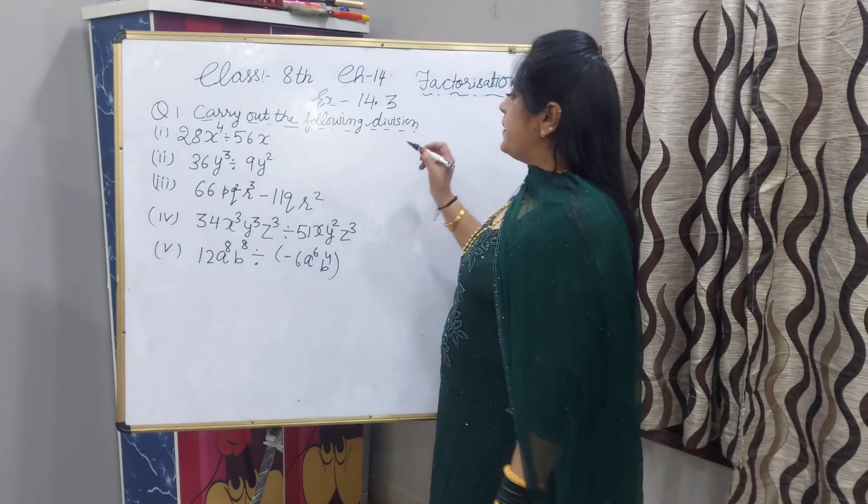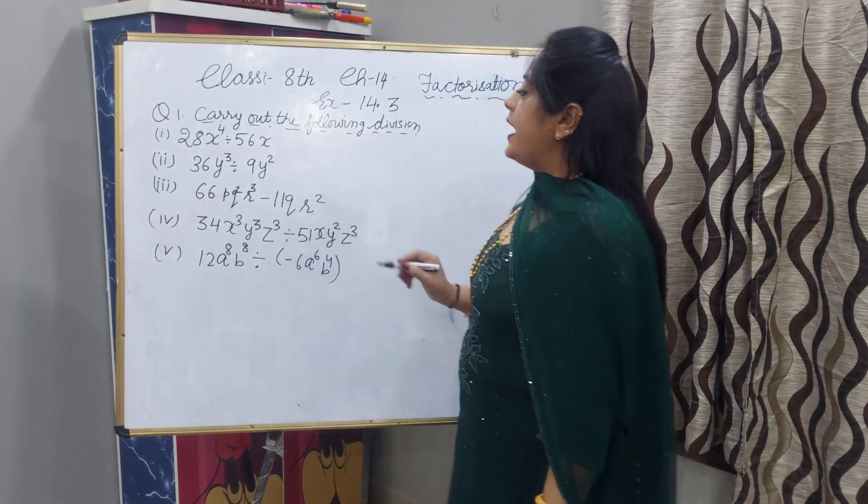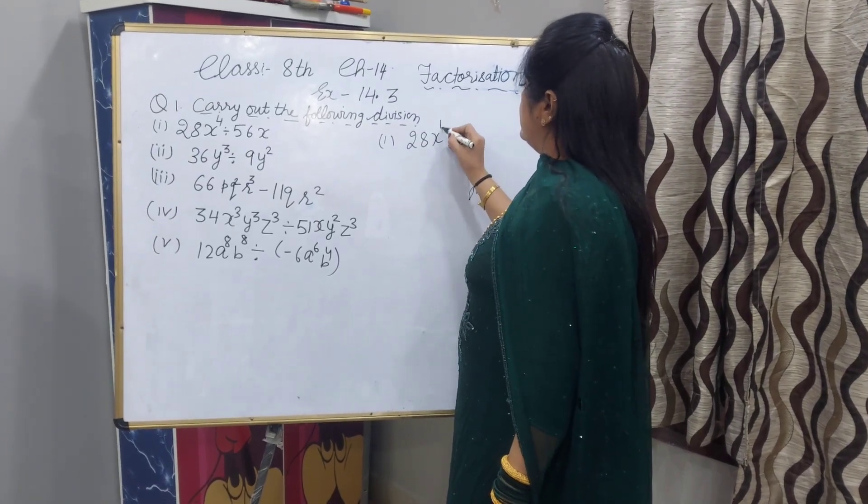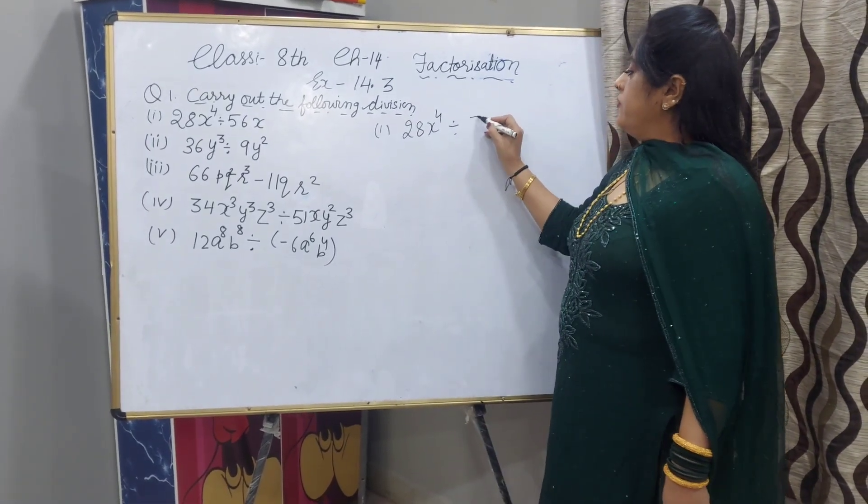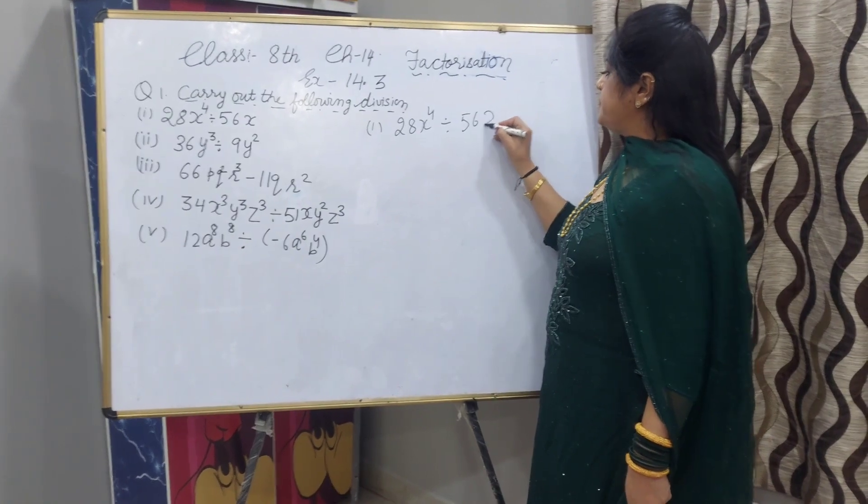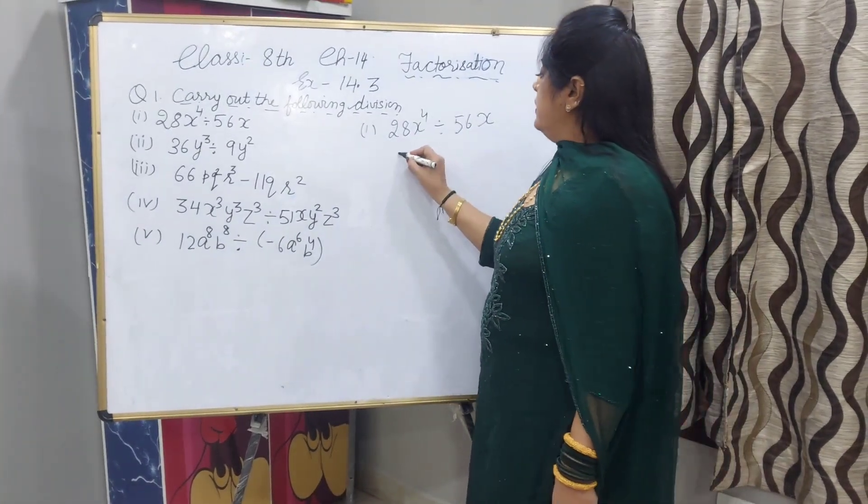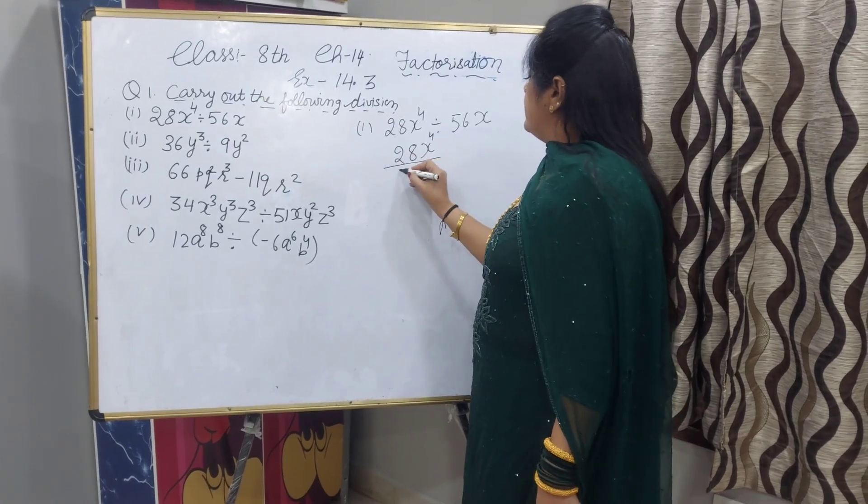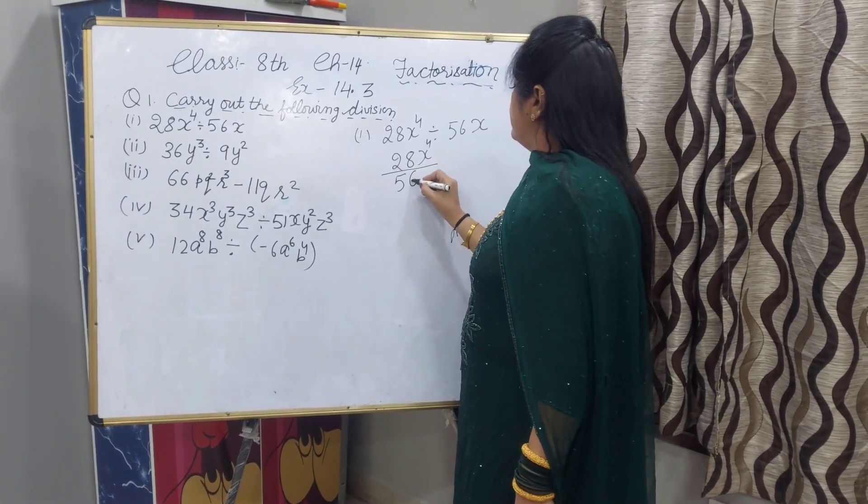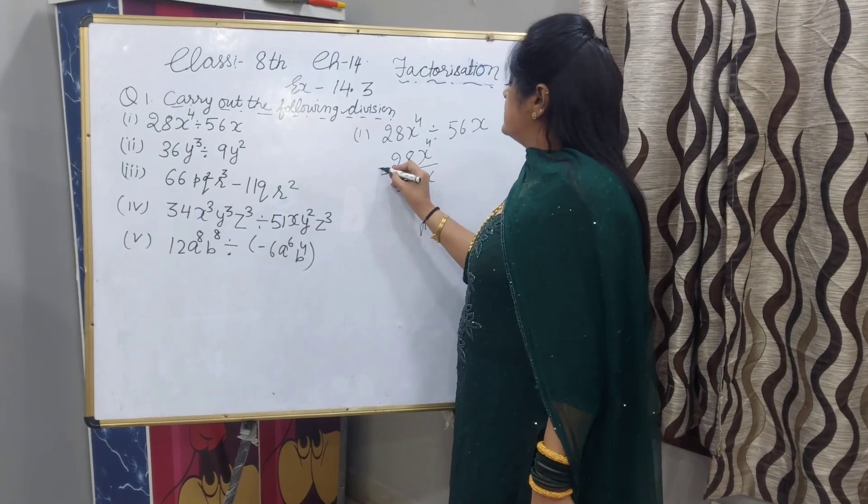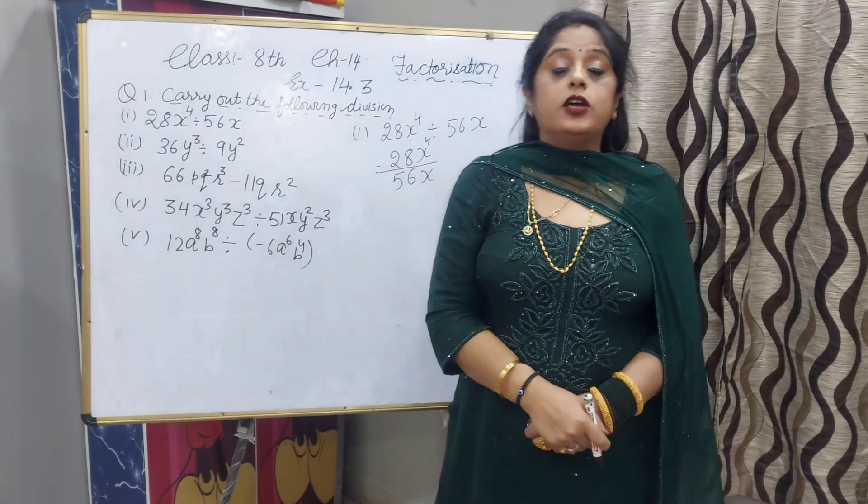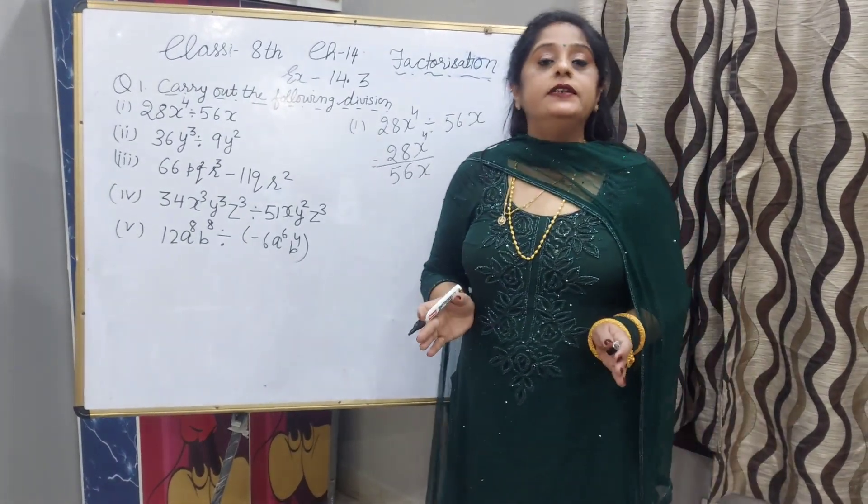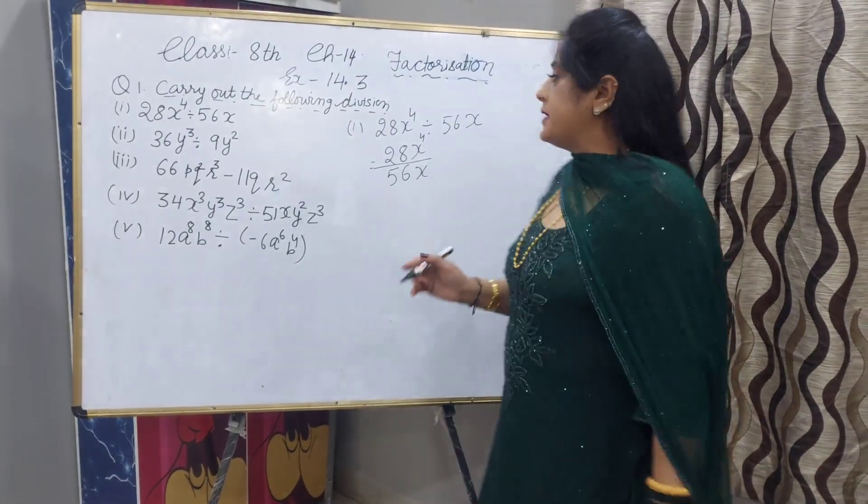First sum, first part: 28x^4 divided by 56x. We will write 28x^4 divided by 56x. You know that the rule of division? If bases are same and we divide, then power will be subtracted.